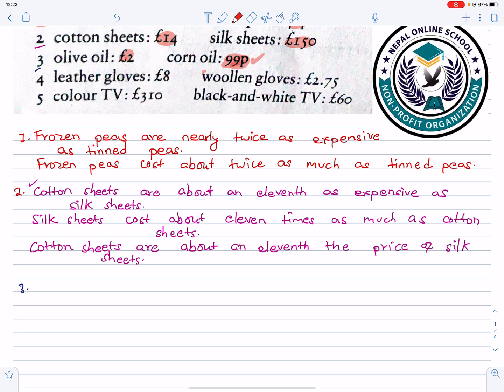P stands for penny, and 100 pence is equal to 1 pound. But 99 pence costs 2 pounds, nearly twice.